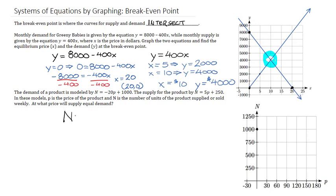The first line, n equals negative 20p plus 1,000, is a good example of one where plotting the intercepts can really save you a lot of work. You can see that I've plotted the y-intercept, because when p equals 0, n is 1,000. What we can also do is look to see what p is when n equals 0.